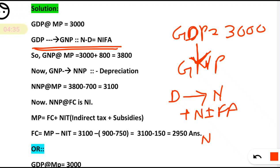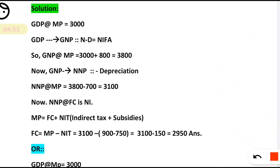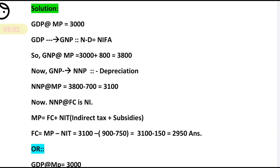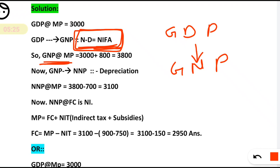When moving from national to domestic, subtract NFIA; domestic to national, add NFIA — that is the thumb rule. We have GDP at market price and we are moving from GDP to GNP, so domestic to national, we add NFIA. National minus domestic equals NFIA. So GNP at market price equals GDP plus NFIA. NFIA is given as 800, so GDP 3000 plus 800 gives GNP of 3800.